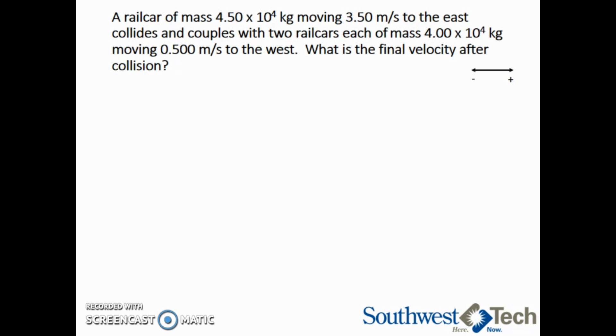We also want to draw a picture so we can make sure we have our velocities defined correctly. We have the railcar of mass 4.5 times 10 to the 4 kilograms moving to the right or east at 3.5 meters per second.